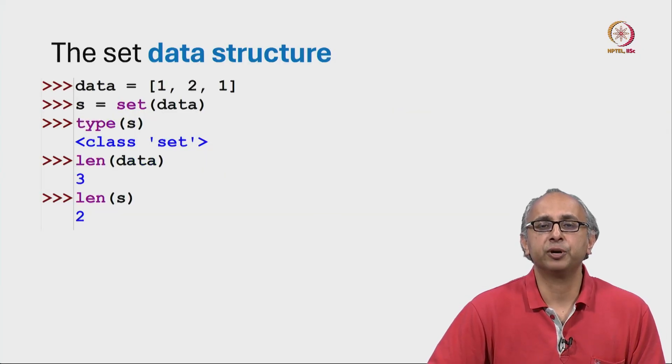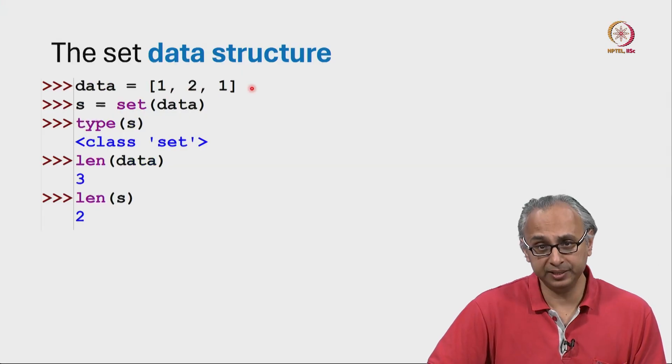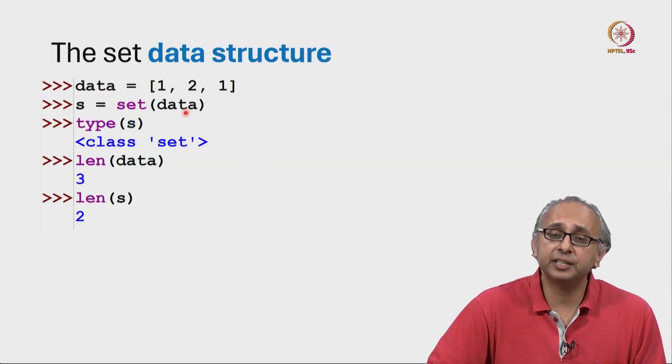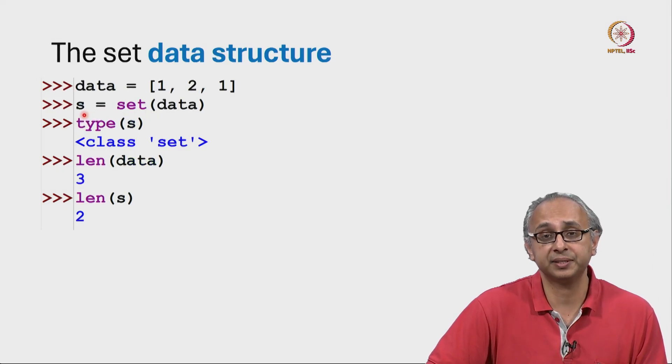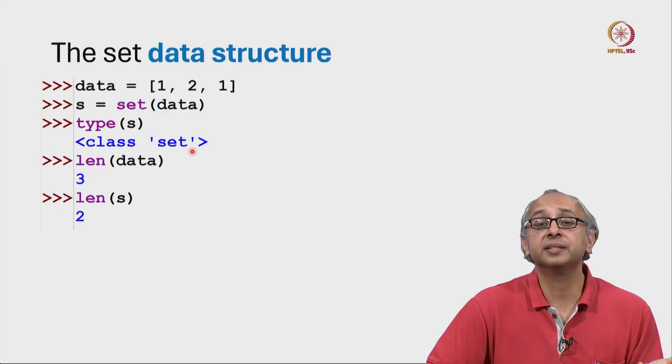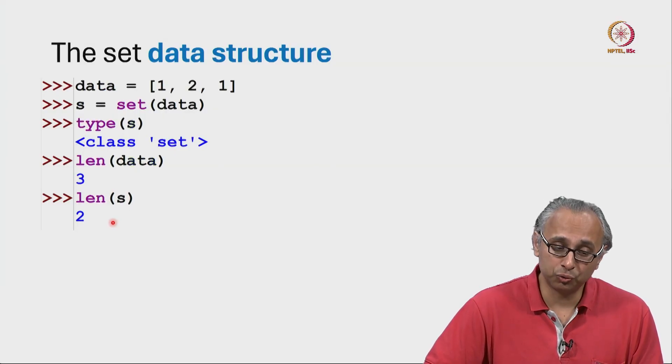So here is an example of a set in our REPL. I have data which is a list and I convert that list into a set and let us say I label the resulting object with the variable s. Now I ask what is the type of s and it says well this is a set. Now the length of the original list data is 3 but the length of the set S is 2.